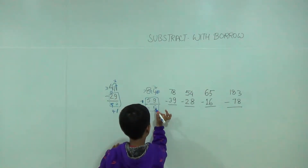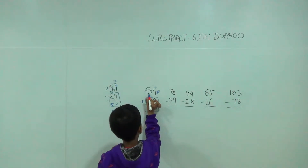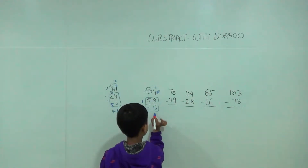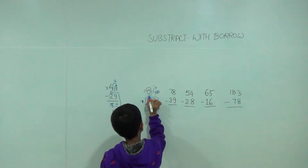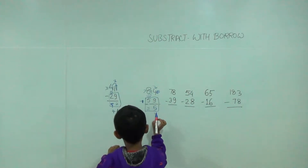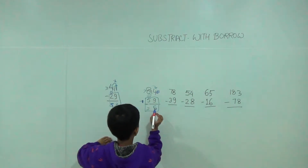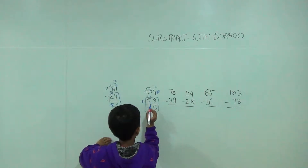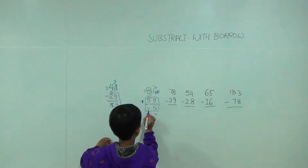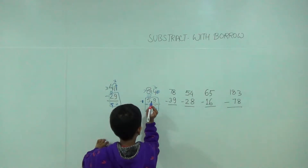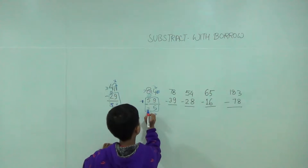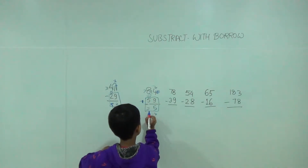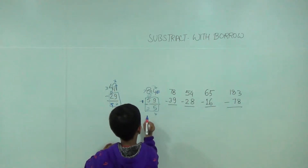9 plus 5 is equal to 14, so 1 would be here and 4 would be here. Then we will circle this and we will circle this, and we will call it borrow. 1 plus 2, and 2 plus 5 is 7.